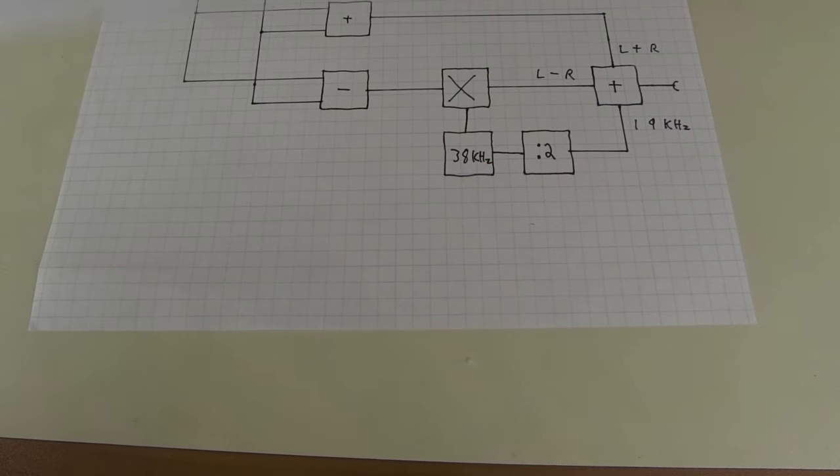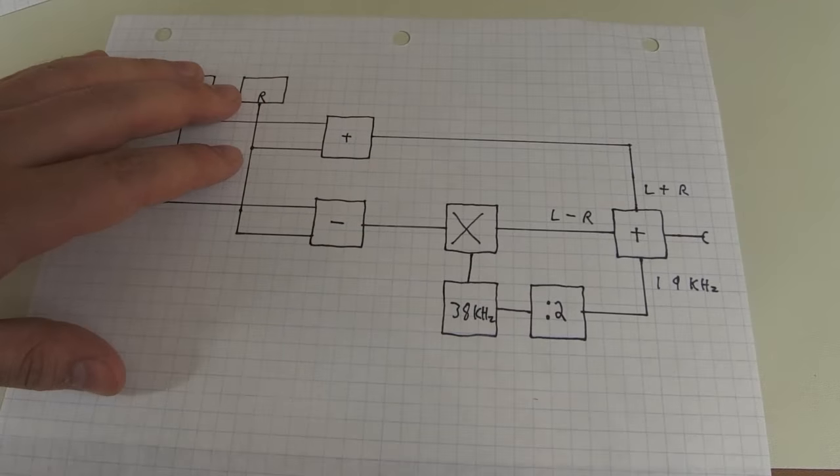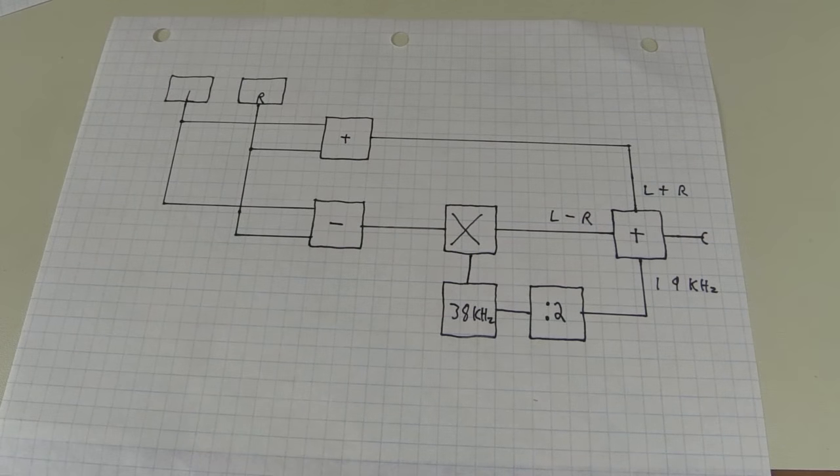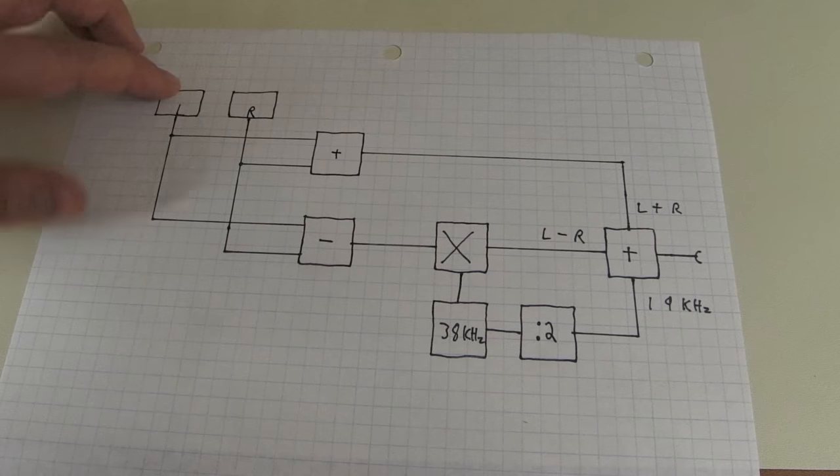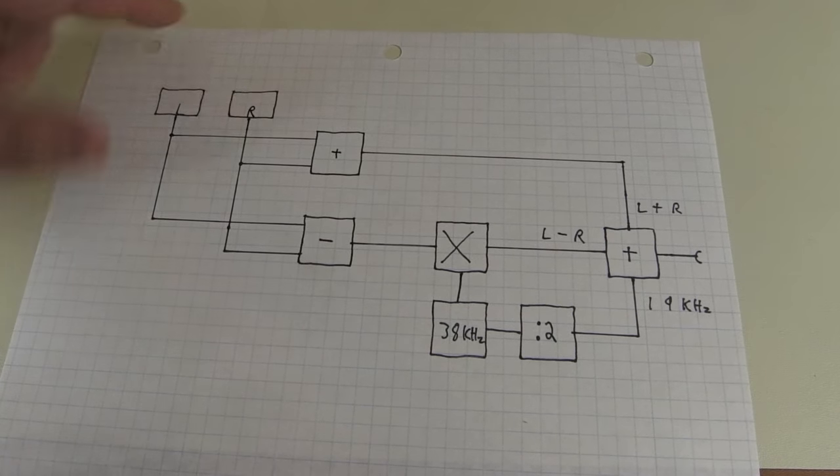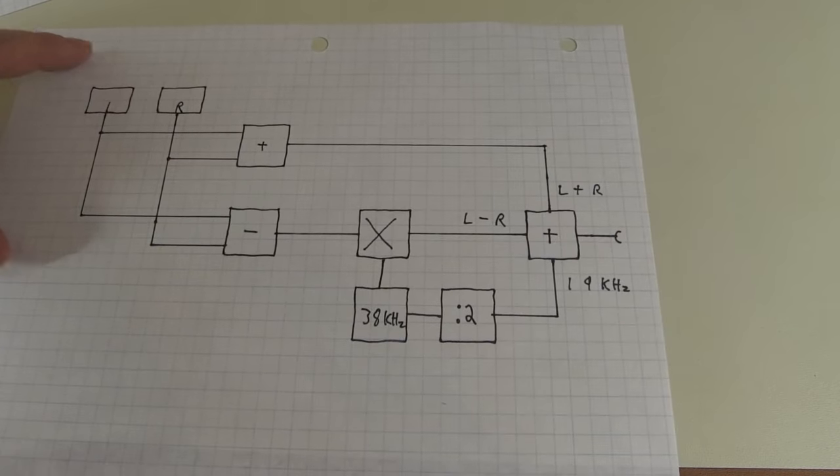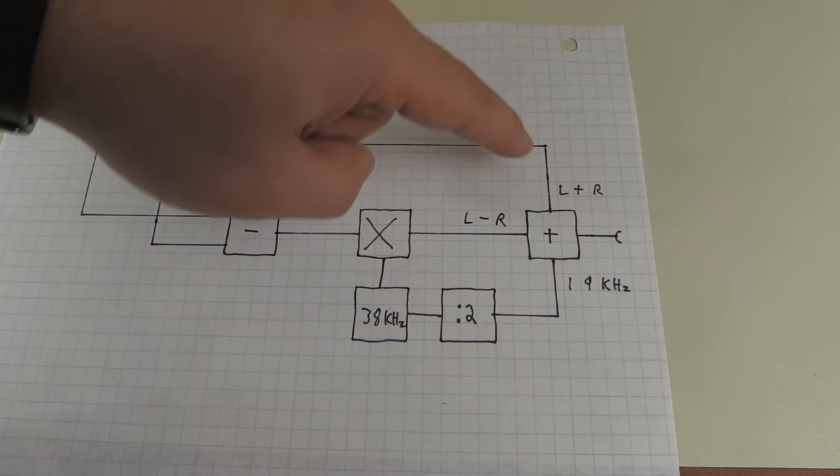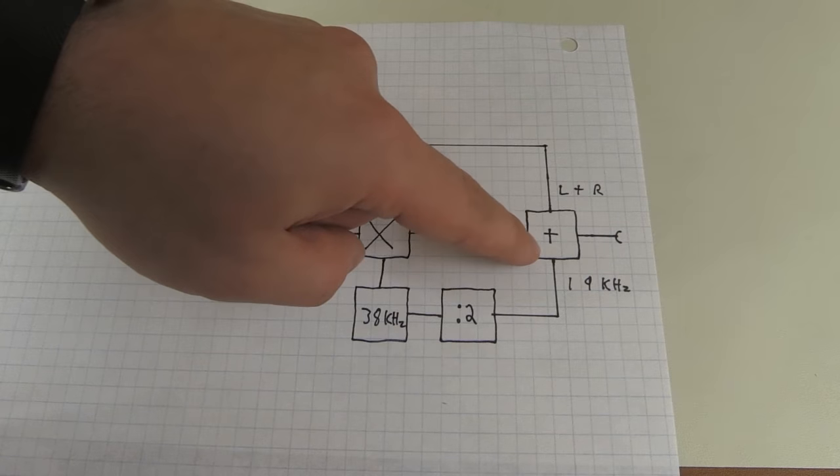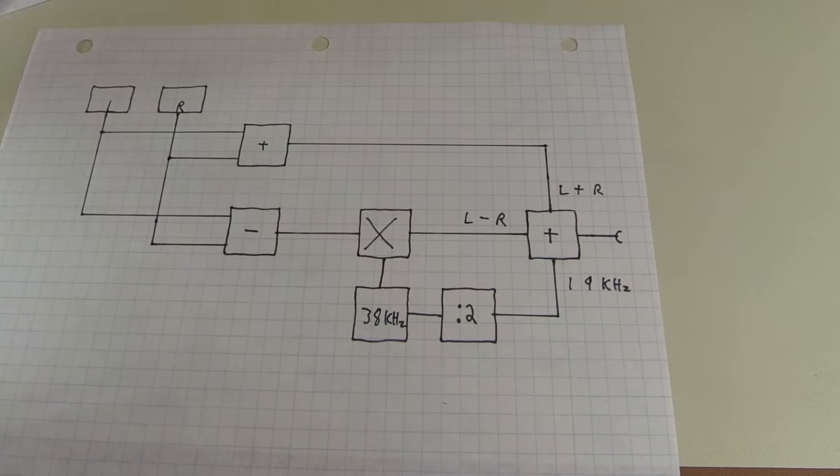So let's get out of the frequency domain view and let's get into the encoder view how this is actually done. So you have your left channel and your right channel up here, again left and right. And the very first signal that you generate is the sum. Left plus right is your summer. And this goes into another summer to create the composite signal. So your left plus right goes in here.